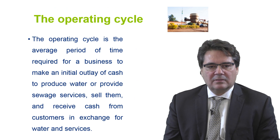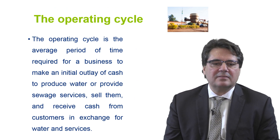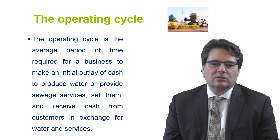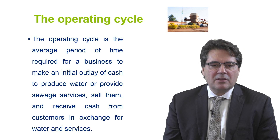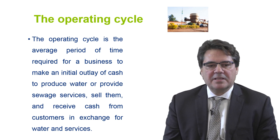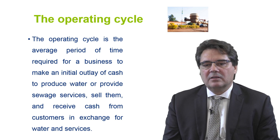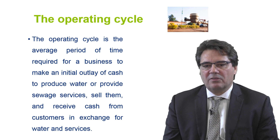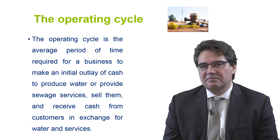The operating cycle is the average period of time required for a business to make an initial outlay of cash, to produce water or provide sewerage services, sell them, and receive cash from customers in exchange for water and services. Regarding client and vendor credit terms and the time needed to both manufacture and sell goods, a company's operating cycle length can substantially vary.